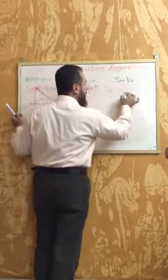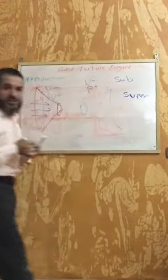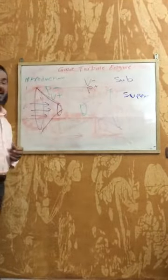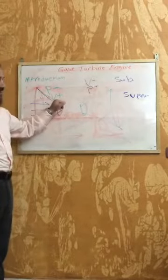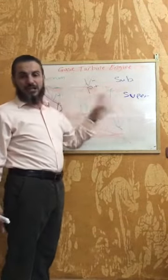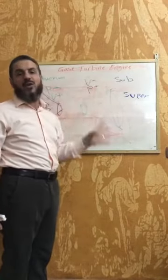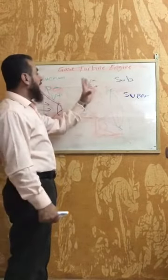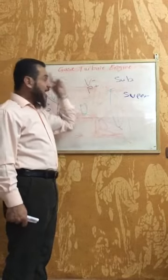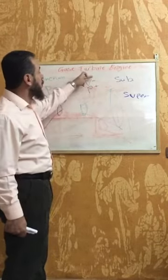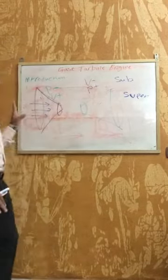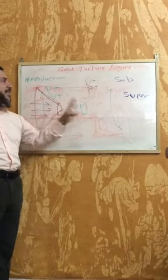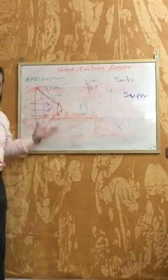In supersonic speed, the rules are reversed: any fluid flowing through a convergent duct will see its pressure increase while its velocity decreases, and vice versa. For a divergent duct in supersonic speed, the velocity will increase and the pressure will decrease. We will talk about this idea independently and in detail.